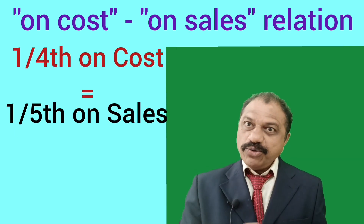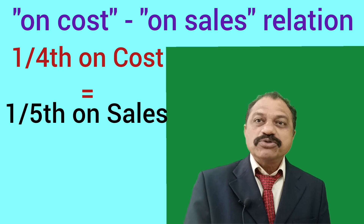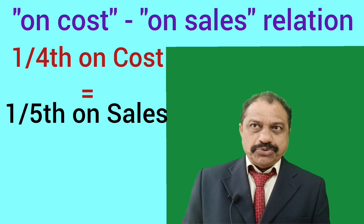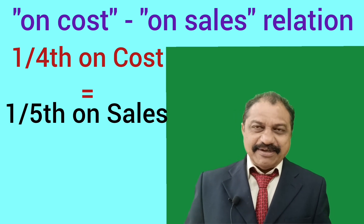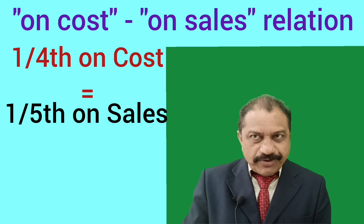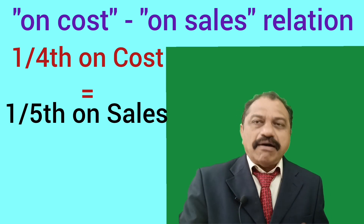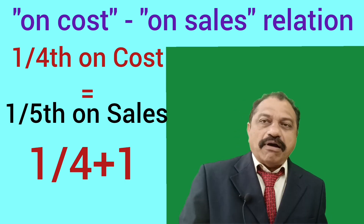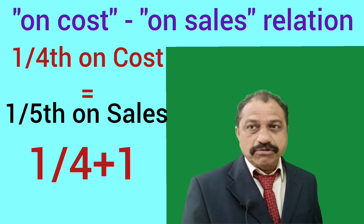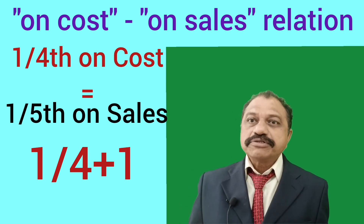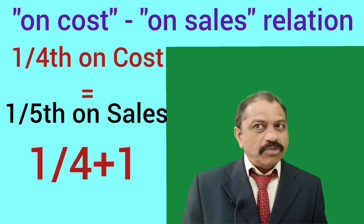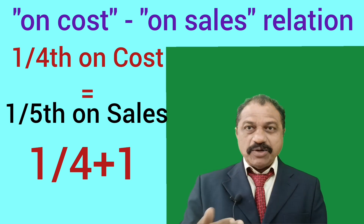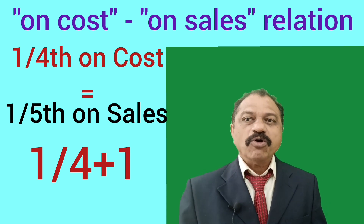Therefore our conclusion is: 1/4 on cost is equal to 1/5 on sales. From Point 1 and Point 2 we can arrive at a new logic: 1/4 on cost equals 1/5 on sales. Now apply the shortcut and check correctness. Our shortcut is: add numerator and denominator of On-Cost and put it as the denominator of On-Sale, with the numerator remaining unchanged. So 1/4 on cost equals 1 by (4+1) on sales, confirming 1/5 on sales.